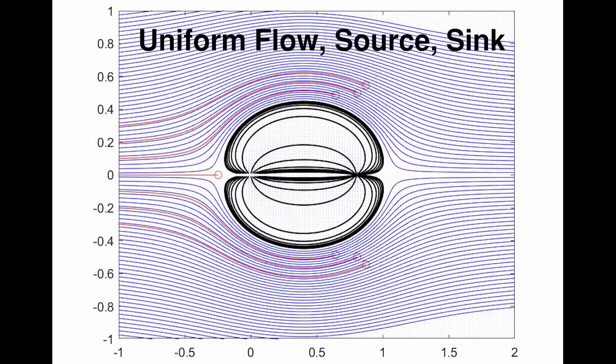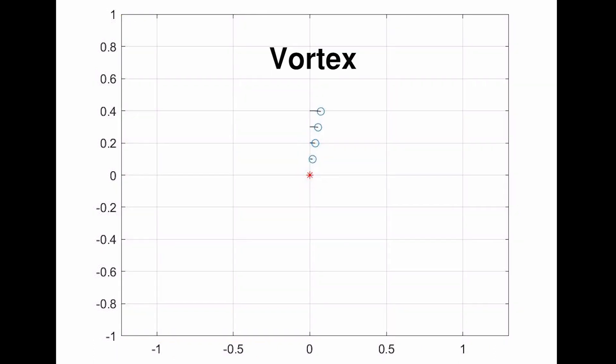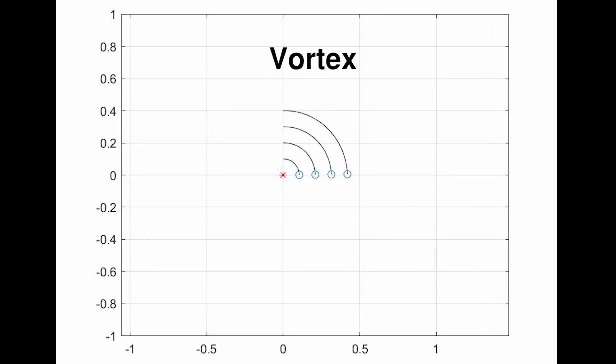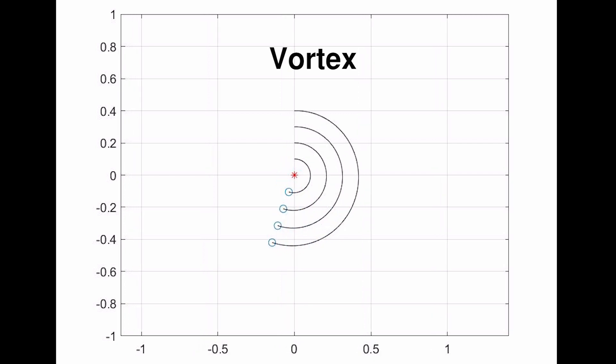The source, sink, and uniform flow are what we call as elementary flows. There is another flow called vortex flow which, as you can imagine, is particles rotating about a point and is an important elementary flow, especially while describing lifting surfaces like airfoils.